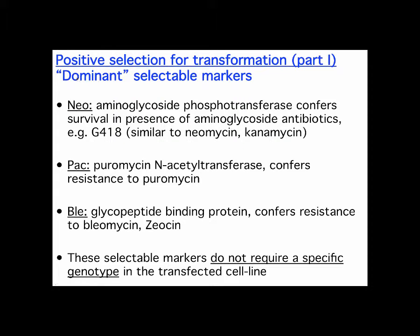Similar kinds of things are puromycin resistance genes and bleomycin resistance genes — these are extra genes you put into the cell, and you know you've gotten the gene inside because all the other cells die. This is your dominant selectable marker. The only cells that survive are the ones that pick it up — very similar to putting an antibiotic resistance gene into bacteria.